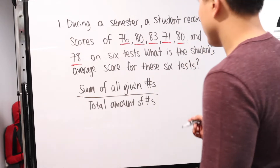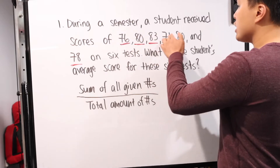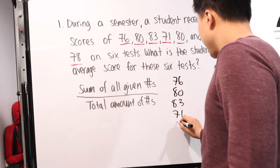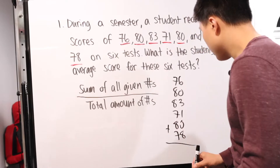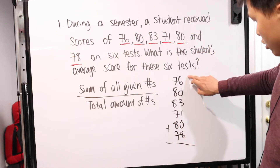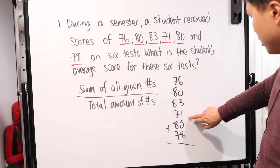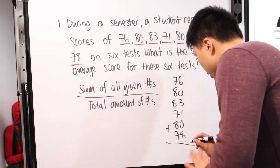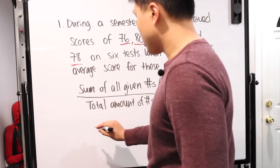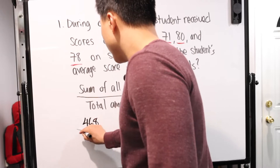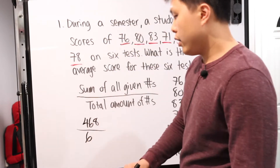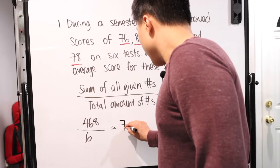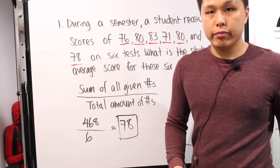Let's look at how to solve this. We have to add each one together: 76, 80, 83, 71, 80, and 78. That's 160 plus 147, which is 307, plus 83 is 390, plus 78 is 468. That's what goes on top. The bottom — we know there are six total numbers, so we divide by six. After we carry this out, that's 78. So 78 is your average, or your mean.